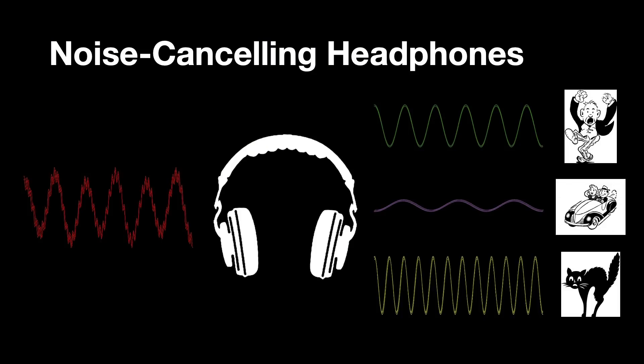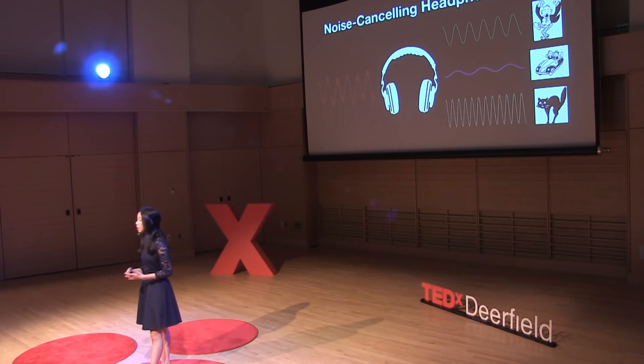Now let's take a look at the Fourier transform in action with noise-canceling headphones. How do they work? Once you put them on, they have a microphone to take in the sounds of ambient noises. They somehow take that discordant symphony of screaming children, honking cars, and overexcited cats, and turn it into silence. How?